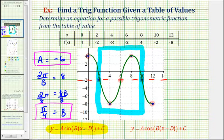Next, let's consider the value of D. D affects the shift left or right. Because we're using the sine function, the graph has been shifted right two units, which means this must be in the form of x minus two, and therefore D will be positive two. It's positive because the minus sign is already in the form of the equation.